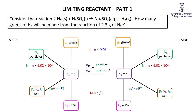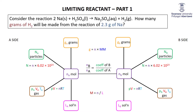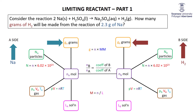Let's do a couple of fast calculations. Consider this reaction: how many grams of H2 can be made from the reaction of 2.3 grams of Na? We know 2.3 grams of Na is the A side, and we're asked for grams of H2, which makes that the B side.